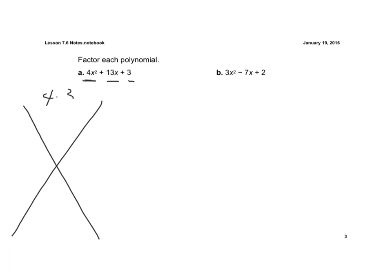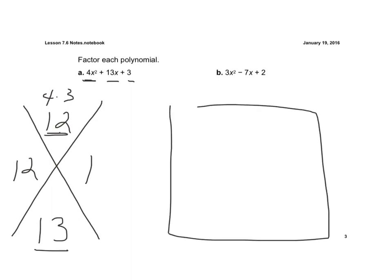So I take 4 times 3, which is 12, and the middle term is 13, and now I ask myself, what factors of 12 add up to 13? Well, 12 and 1. 12 times 1 is 12, and 12 plus 1 is 13. And now I'm ready to use my box.